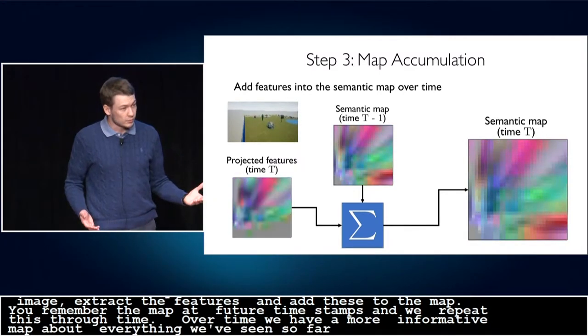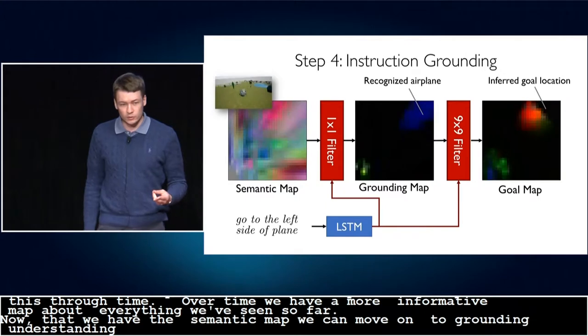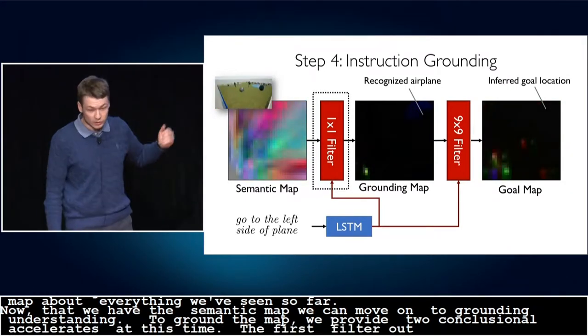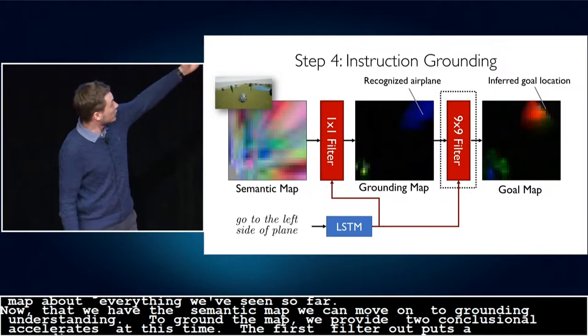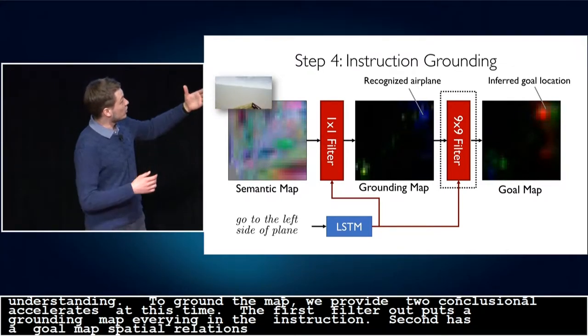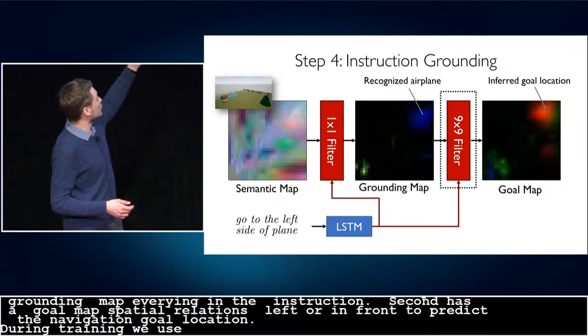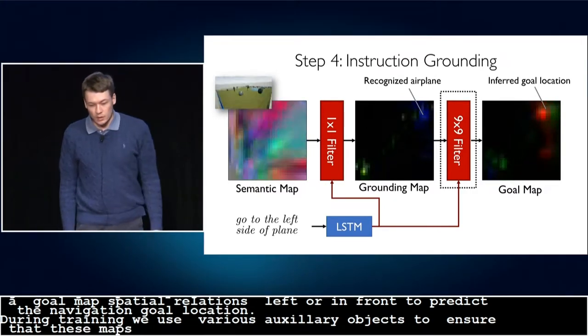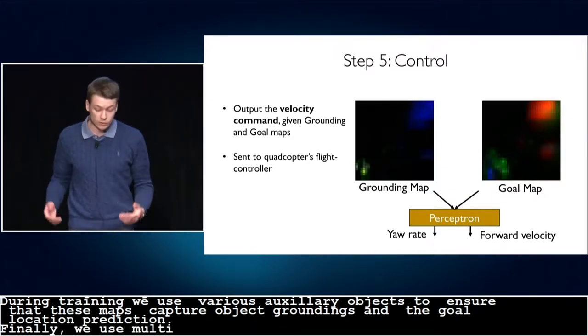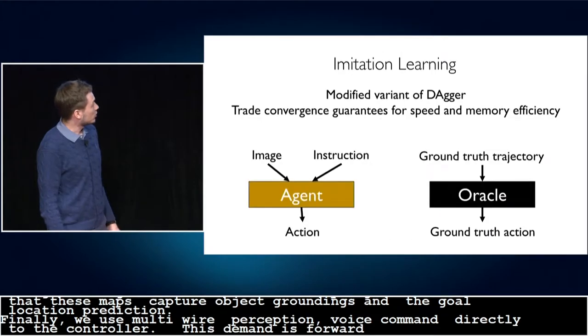Now that we have this semantic map, we can move on to instruction understanding. To ground the instruction in the map, we apply two convolutional filters where the kernels have been computed from the instruction at test time. The first filter outputs a grounding map that highlights every object that was mentioned in the instruction. The second filter outputs a goal map. It learns to resolve spatial relations such as left of or in front to predict the navigation goal location. During training, we use various auxiliary objectives to ensure that these maps actually capture object groundings and the goal location prediction. Finally, we use a multilayer perceptron to output the velocity command that we send directly to the drone's flight controller. This velocity command consists of forward linear velocity and an angular yaw rate.